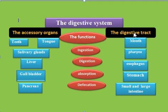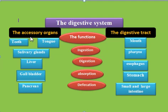Generally, the digestive system is divided into two anatomical divisions: the digestive tract and the accessory organs. The digestive tract is a tube extending from the mouth to the anus, measuring about 9 meters, equal to 30 feet in length. It includes the mouth, pharynx, esophagus, stomach, and the small and large intestine. The accessory organs include teeth, tongue, salivary glands, liver, gallbladder, and pancreas.